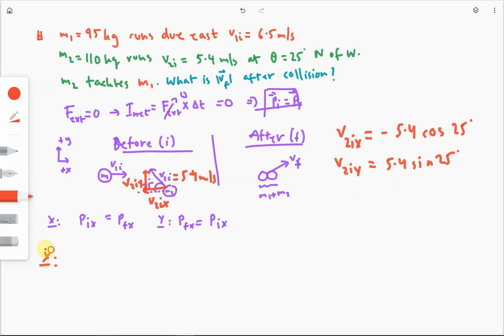Now, let's just consider our x component. In the x direction, what was our initial momentum? M1 V1Ix plus M2 V2Ix. This would be equal to M1 plus M2 times the final x component of velocity. So what do we have to write here? M1 is 95 kilograms times V1Ix was 6.5 in the positive x direction. M2 was 110. And then, V2Ix, we just wrote down up above, negative 5.4 cosine 25.